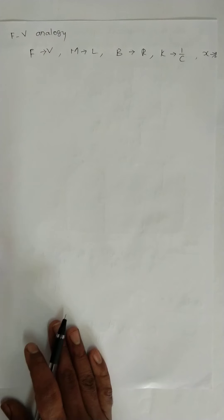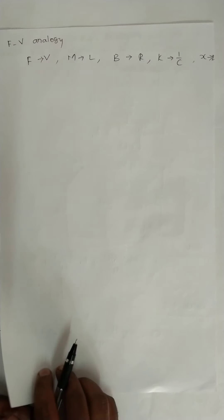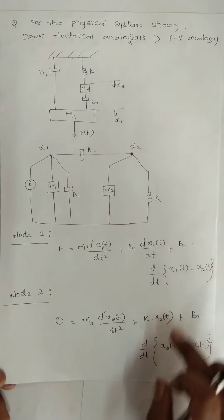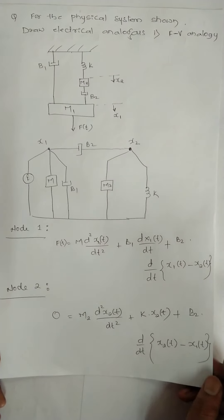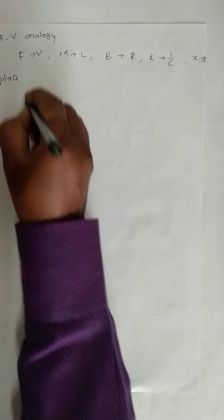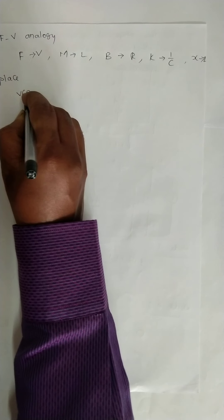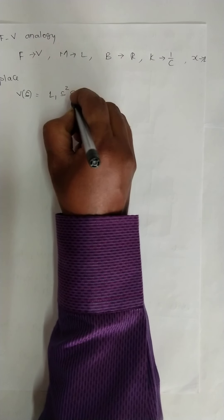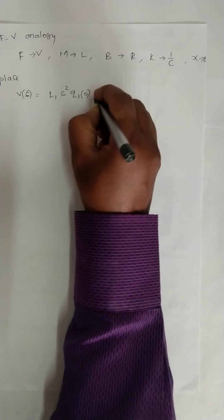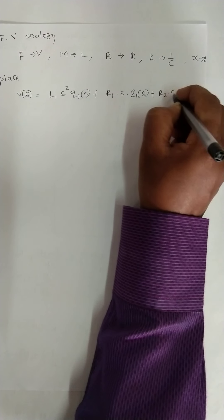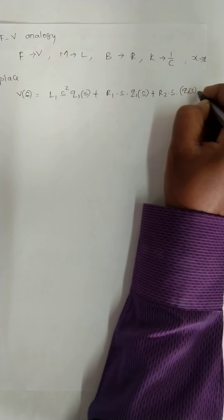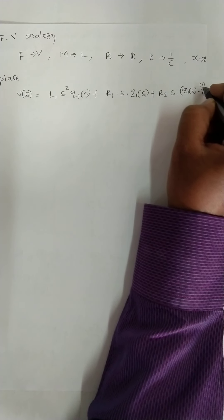Now, whatever equations we got for node 1 and node 2, we will replace F(t) by V(t). So directly we will convert this in terms of Laplace. V(s) is equal to L1 s² Q1(s) plus R1 s Q1(s) plus R2 s (Q1(s) - Q2(s)).